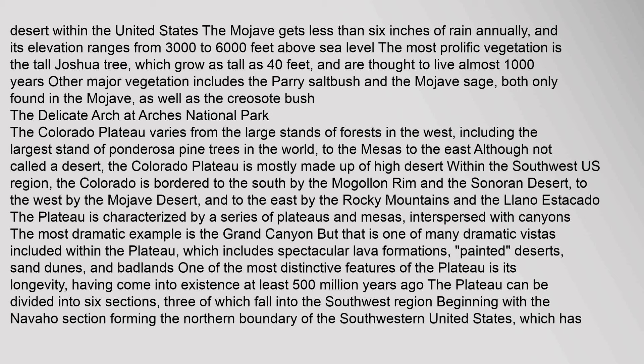The Colorado Plateau varies from large stands of forests in the west, including the largest stand of ponderosa pine trees in the world, to the mesas to the east. Although not called a desert, the Colorado Plateau is mostly made up of high desert within the southwest U.S. region. The Colorado is bordered to the south by the Mogollon Rim and the Sonoran Desert, to the west by the Mojave Desert, and to the east by the Rocky Mountains and the Llano Estacado. The Plateau is characterized by a series of plateaus and mesas interspersed with canyons. The most dramatic example is the Grand Canyon, but that is one of many dramatic vistas included within the plateau, which includes spectacular lava formations, painted deserts, sand dunes, and badlands.